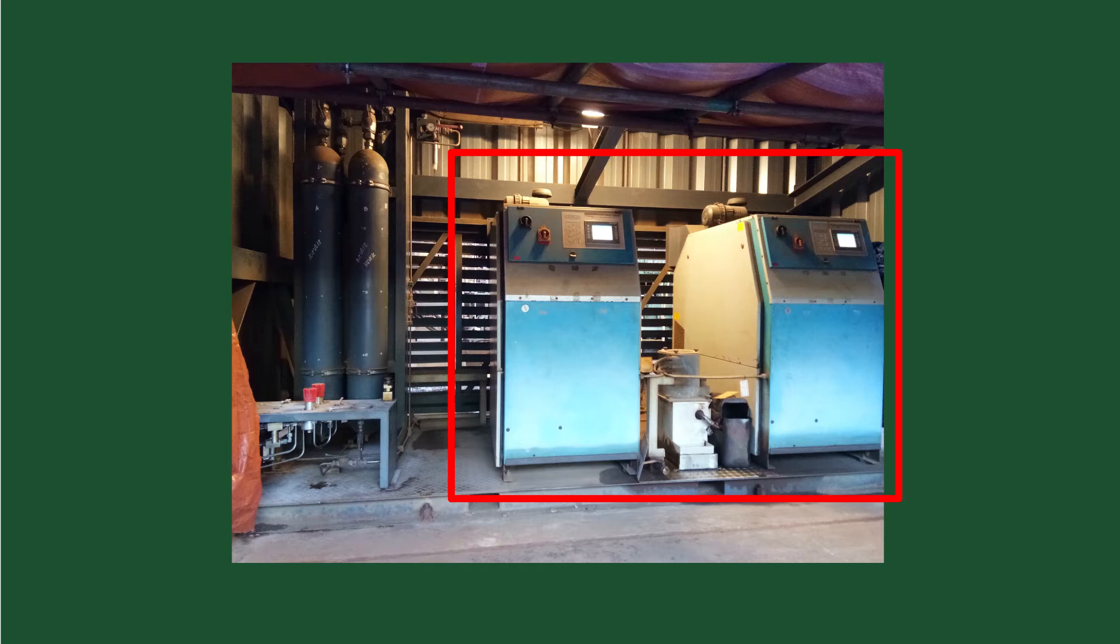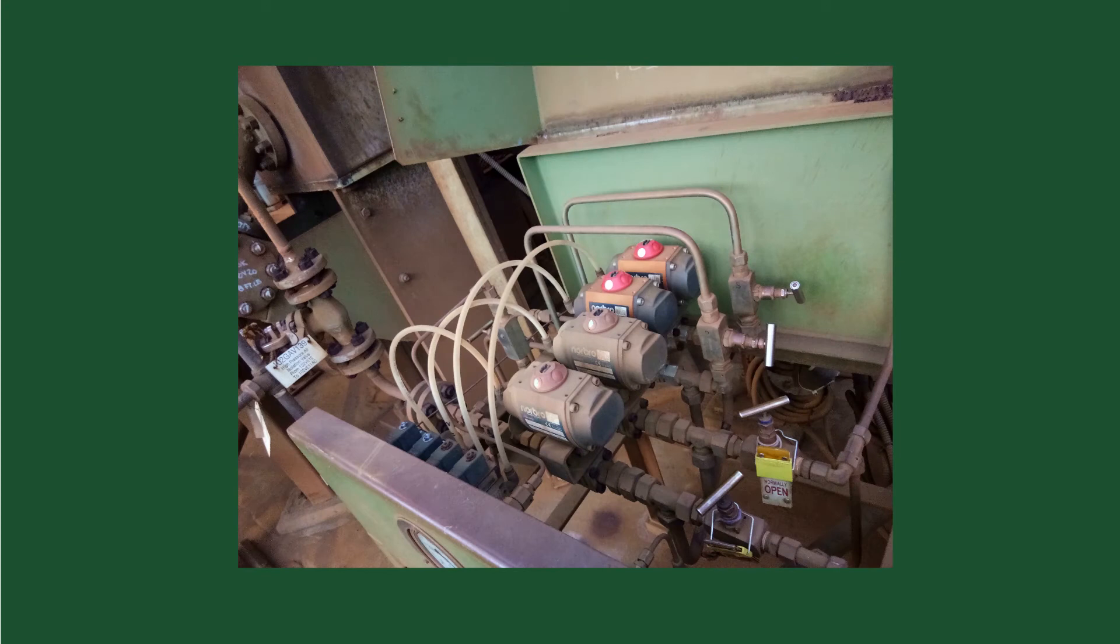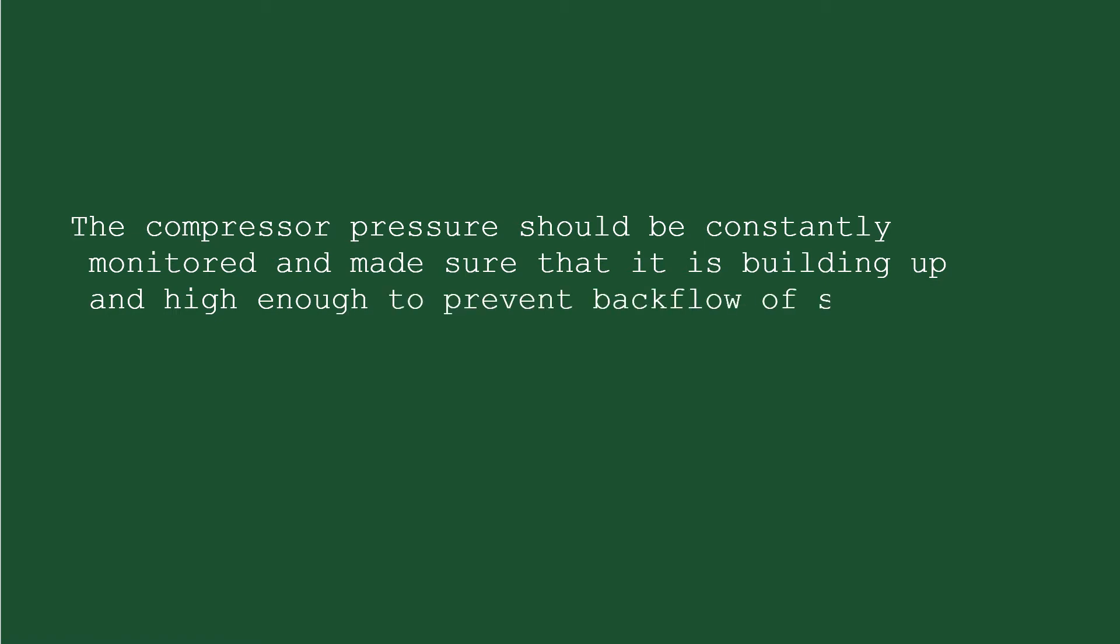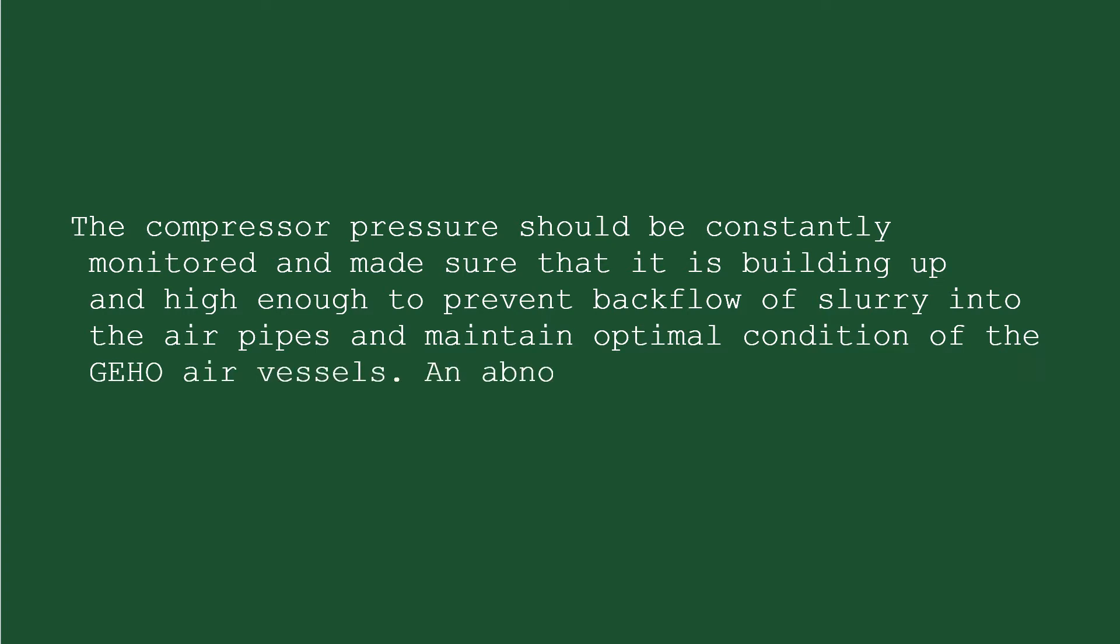That is, with one unit functioning as the master and one unit as slave. The air is supplied to suction and discharge air vessels via the level control valves. The compressor pressure should be constantly monitored and made sure that it is building up and high enough to prevent backflow of slurry into the air pipes and maintain optimal condition of the Geho air vessels. An abnormal trend in pressure should be reported immediately.